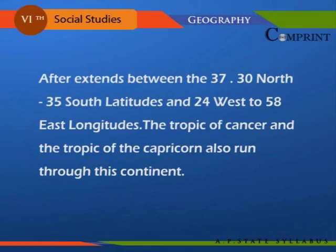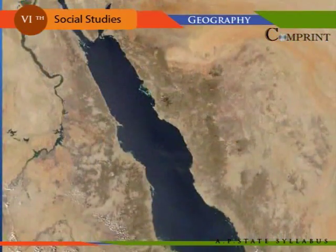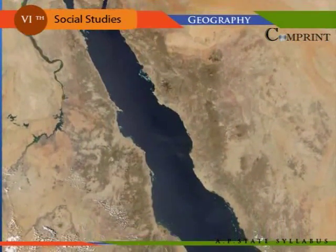Africa extends between 37 degrees 30 minutes north and 35 degrees south latitudes, and 24 degrees west to 58 degrees east longitudes. The Tropic of Cancer and Tropic of Capricorn also run through this continent.